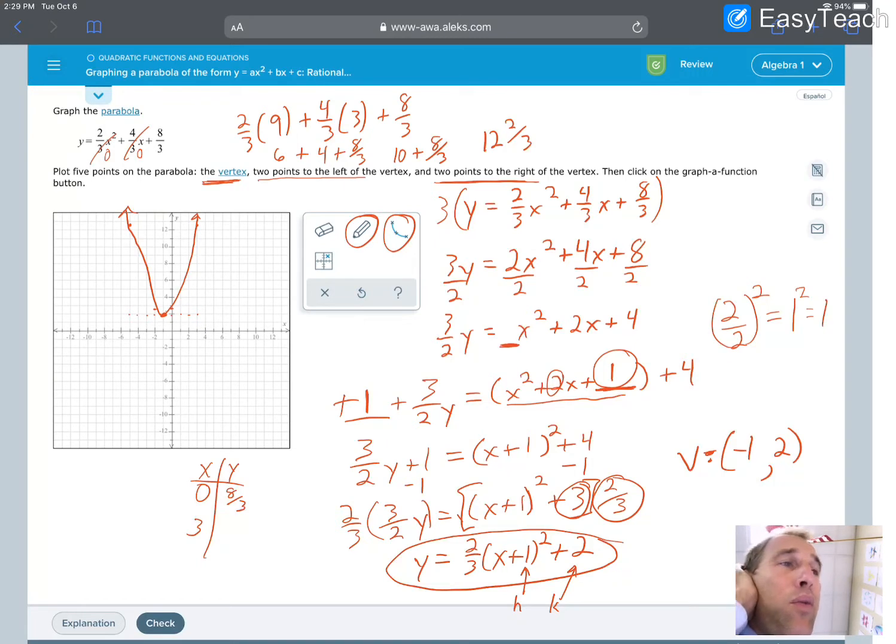Hope that helps. I know that's a really difficult process to go through the steps again. You need to solve this by completing the square. Once you complete the square, you can turn it into vertex form. Find your vertex, and then find your points based off of where that vertex is to the left and right. It's a tough problem, but you can do it. Good luck.